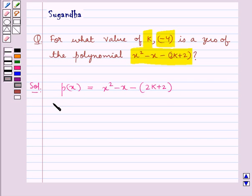We are given that -4 is a zero of the polynomial p(x). Therefore, p(-4) = 0.